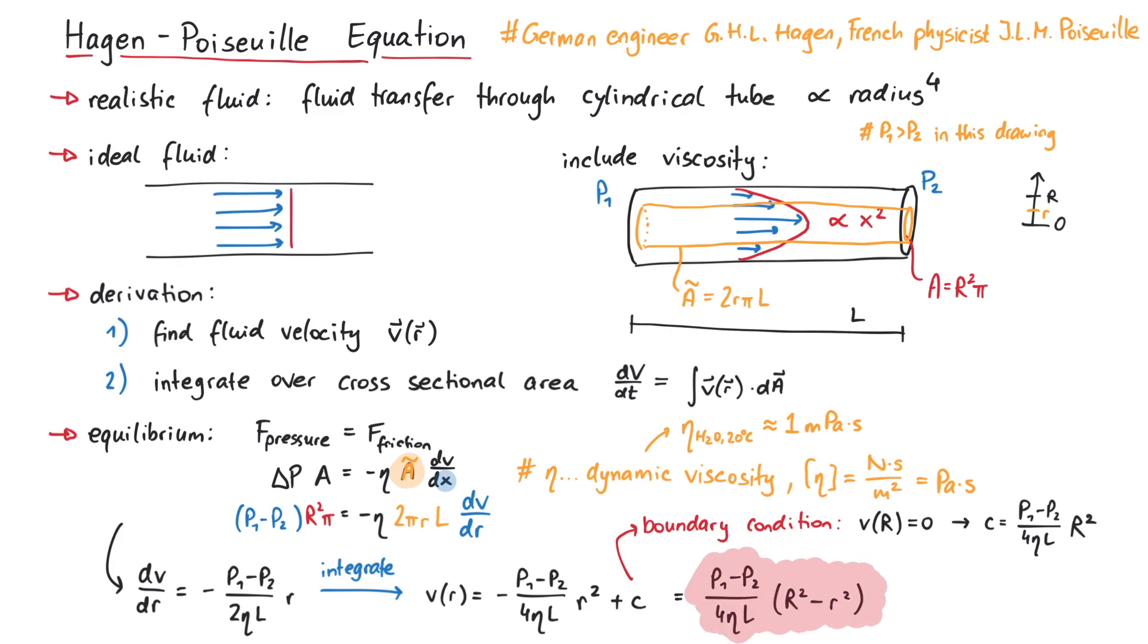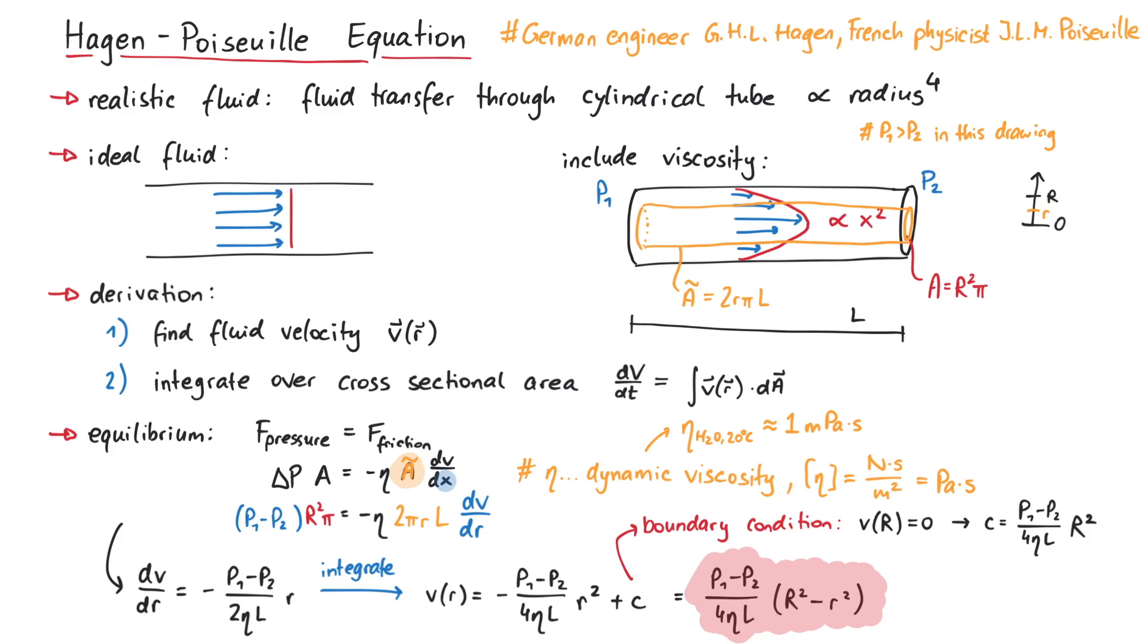Now we can start the second part of the derivation. We want to know how much liquid flows through the tube per time. This is given by the integral of velocity integrated over the cross-sectional area. To see this, consider one small volume of fluid, given by dx dy dz.